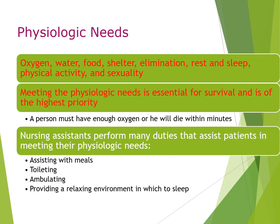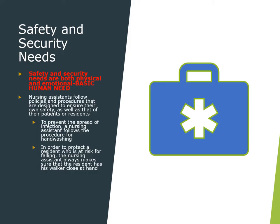Physiological needs — the most basic — include oxygen, water, shelter, elimination, rest and sleep, physical activity, and sexuality. Meeting physiological needs is essential for survival and is the highest priority. A person must have enough oxygen or will die within minutes. Nursing assistants perform many duties to assist patients in meeting these needs, such as assisting with meals, toileting, and ambulation, and providing a relaxing environment for sleep. Safety and security needs are both physical and emotional. Nursing assistants follow policies and procedures to ensure safety and prevent infection, for example through proper hand washing.